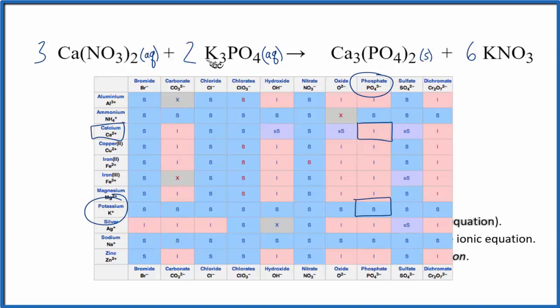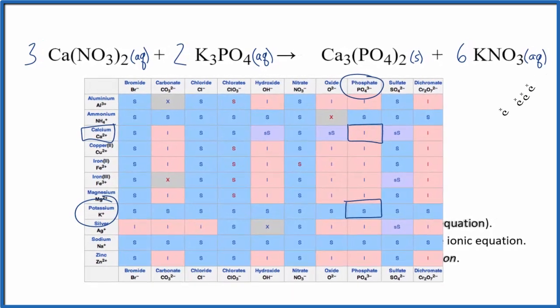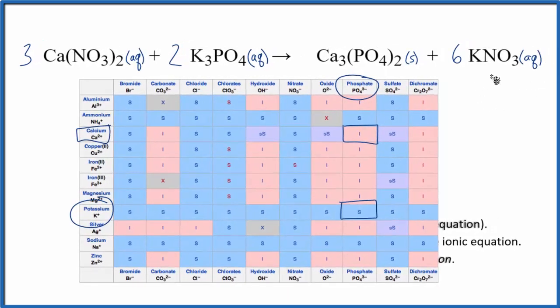When these two compounds, these two aqueous compounds are mixed together, we'll have calcium phosphate formed. It'll be a solid and it'll fall to the bottom. It'll be a precipitate. So this is a solid. Nitrates again, they are very soluble, dissolving water aqueous. So now we have our states.